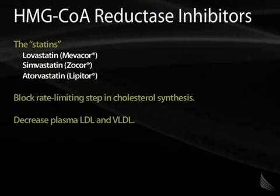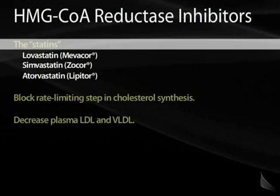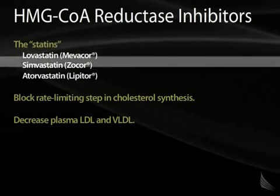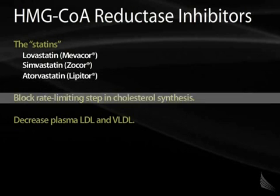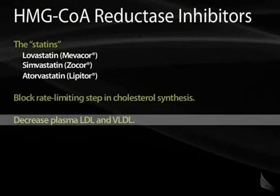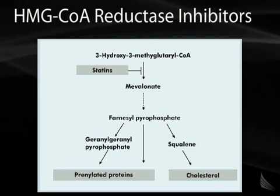The most important medications for lowering cholesterol are the statins. Common ones include lovastatin, simvastatin, and atorvastatin. These medications work by inhibiting the enzyme HMG-CoA reductase, which is the rate-limiting step in cholesterol synthesis in humans, decreasing plasma LDL and VLDL. 3-hydroxy-3-methylglutaryl-CoA is converted to mevalonate by HMG-CoA reductase, and statins work by blocking this enzyme.